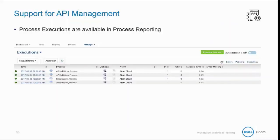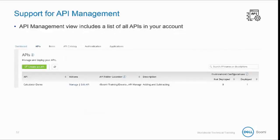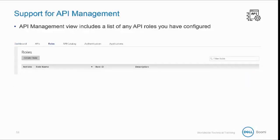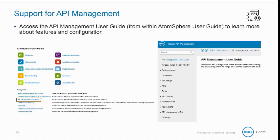Support for API Management includes the Process Reporting page, where process executions are available. The API Management view includes the API Management dashboard and a list of all APIs in your account. You'll see a list of any API roles you may have configured, as well as an API catalog, which includes access to a developer portal. You can access the API Management user guide to learn more about features and configuration of API management in AtomSphere.